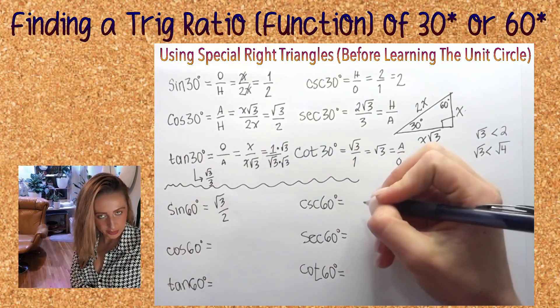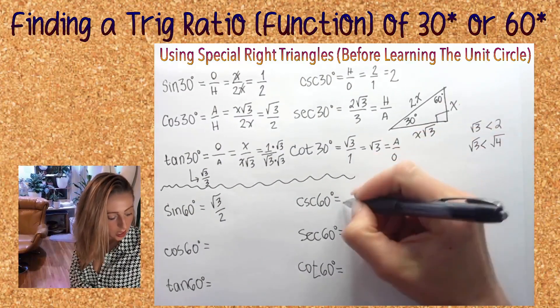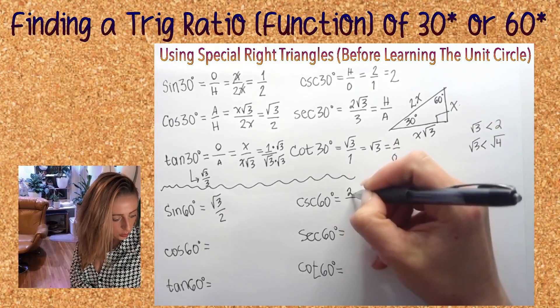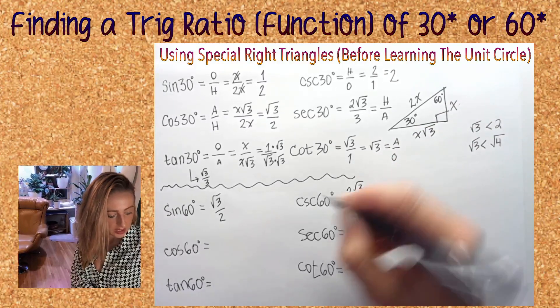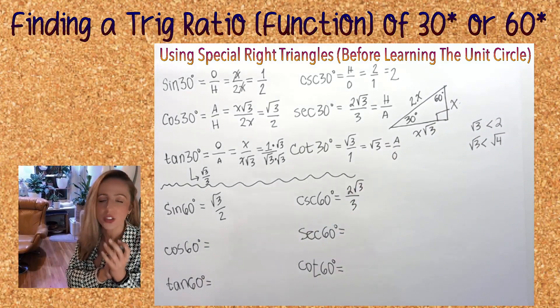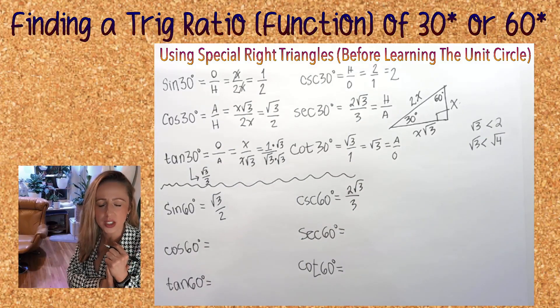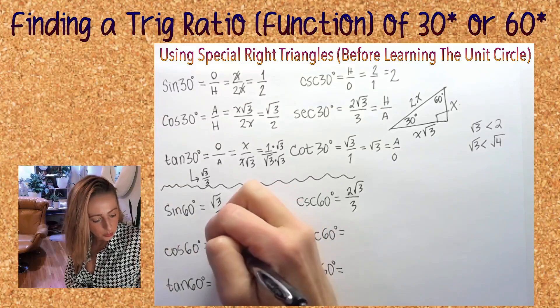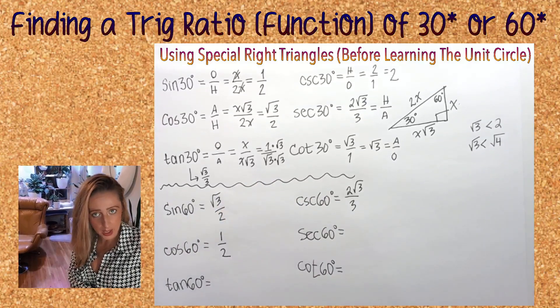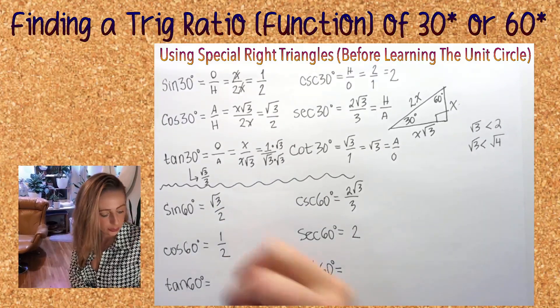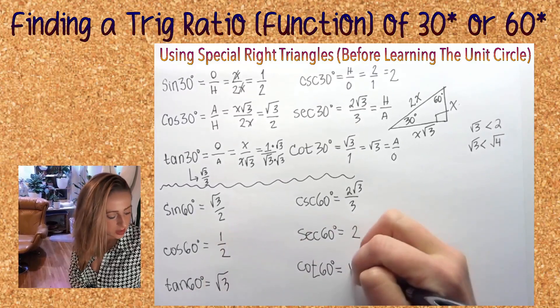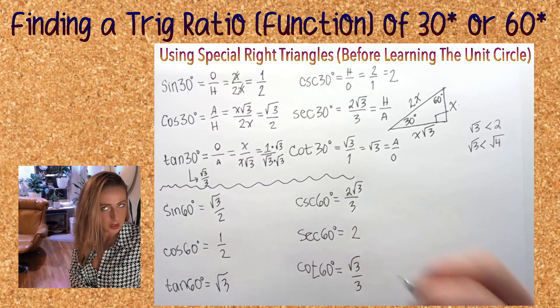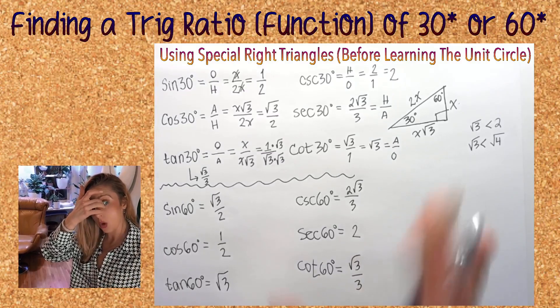If you do all your work here you get 2 root 3 over 3. If you do your work again, here you get 1, this is 2, this is root 3, and this is root 3 over 3 again. All you need is that picture.